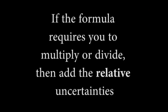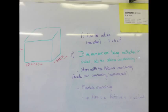There is a formula which says that if the formula requires you to multiply or divide, then add the relative uncertainties. That means you have to find the relative uncertainties first. To do so, you have to take the amount of uncertainties in each measurement and divide it by the measurement. So if the box has 24 cm of base and 0.2 uncertainty, you're going to take 0.2 and divide it by 24.